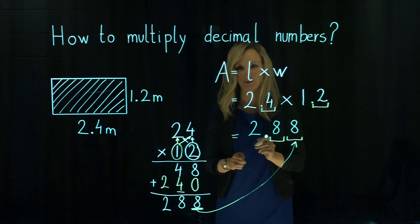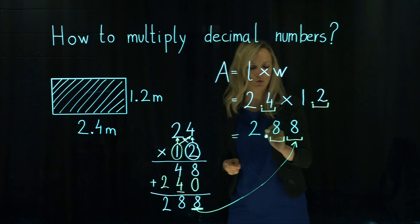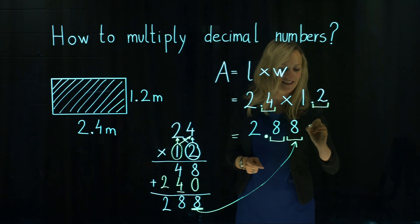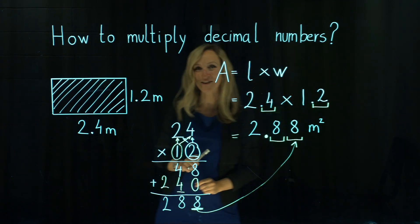So the area of a standard plasterboard is 2.88 meters squared. Thank you for watching.